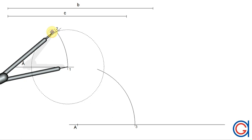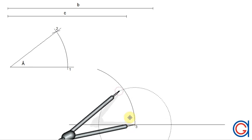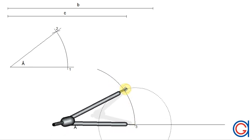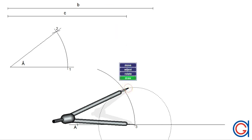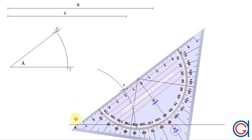We will call this new point, point three. The next step is setting our compass on point one and with radius one-two, we transport this radius onto the previously drawn arc. Setting our compass on point three, we scribe an arc until it cuts our previously drawn arc at a new point which we will call point four. We then draw a line from point A through point four.